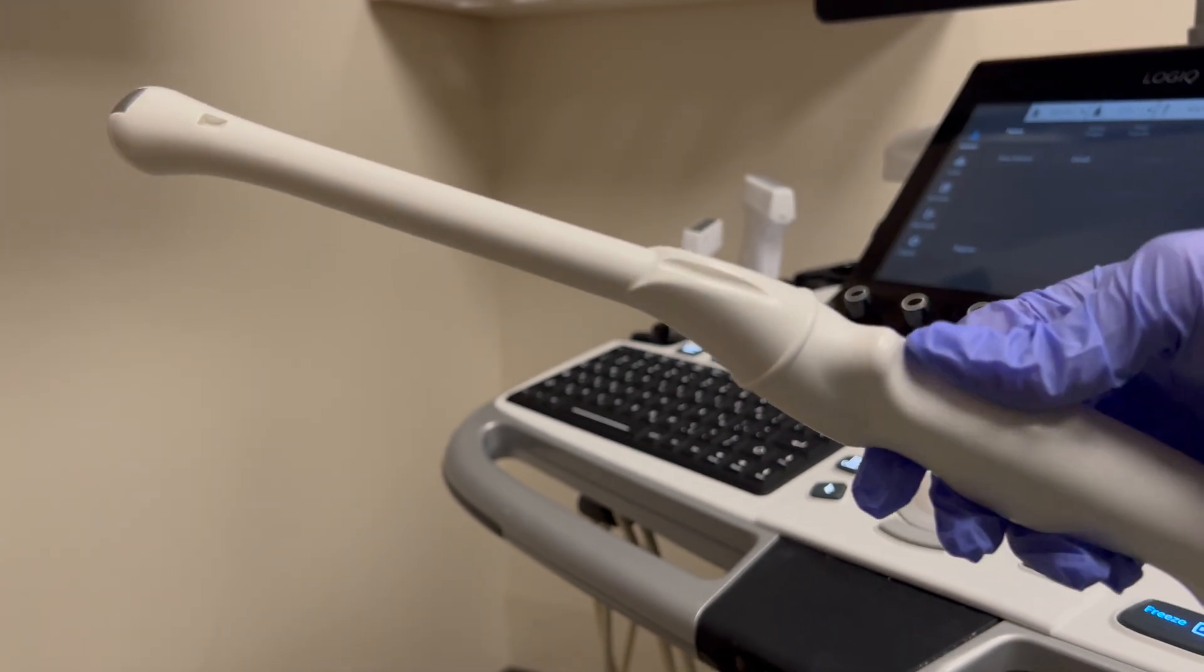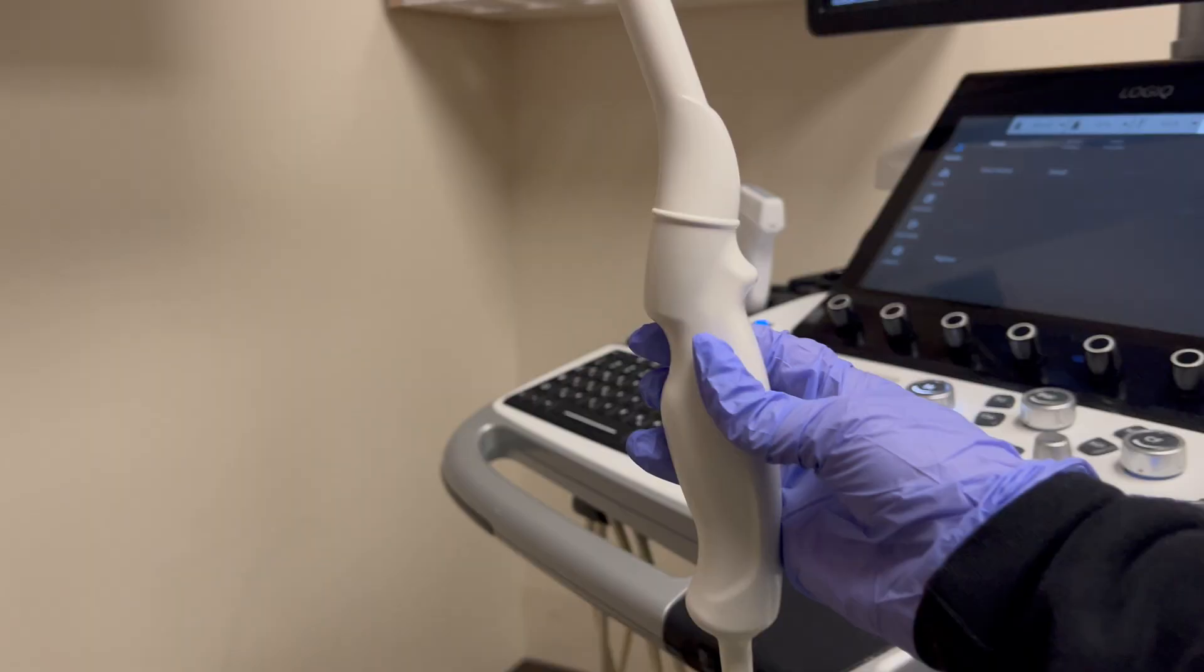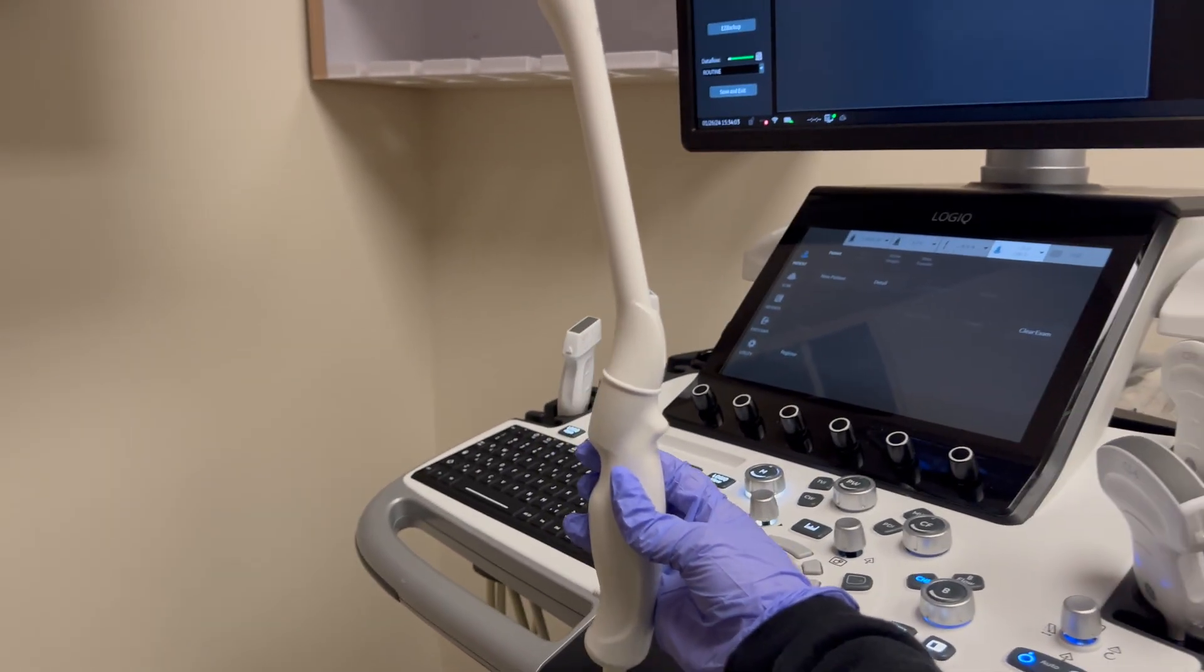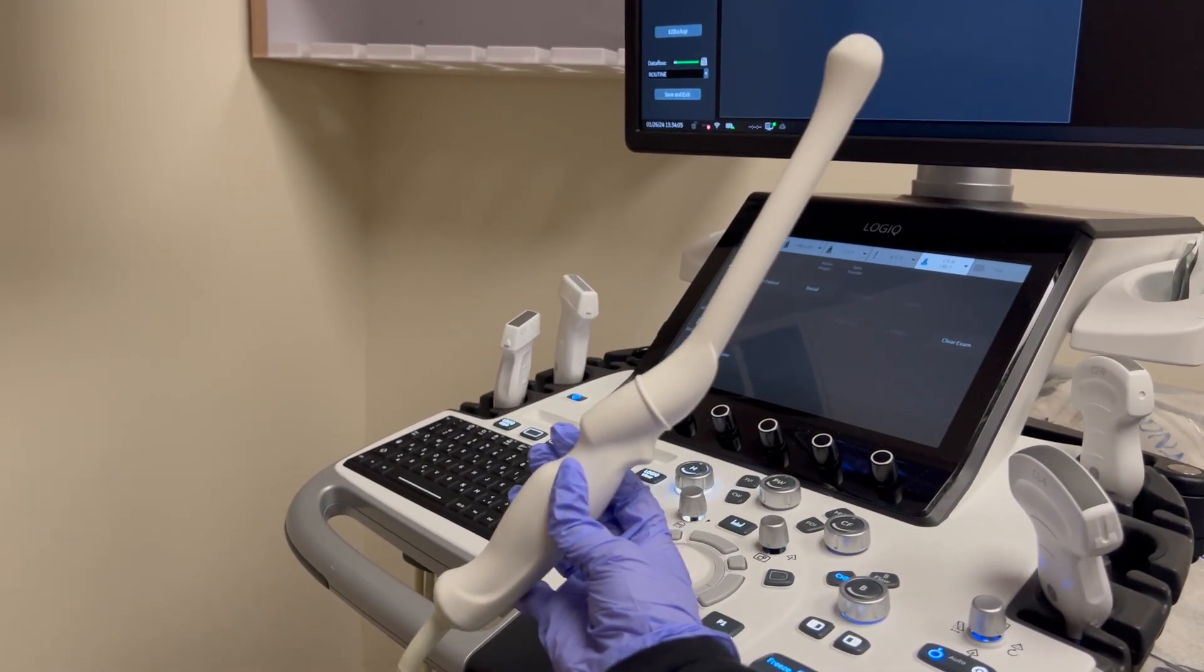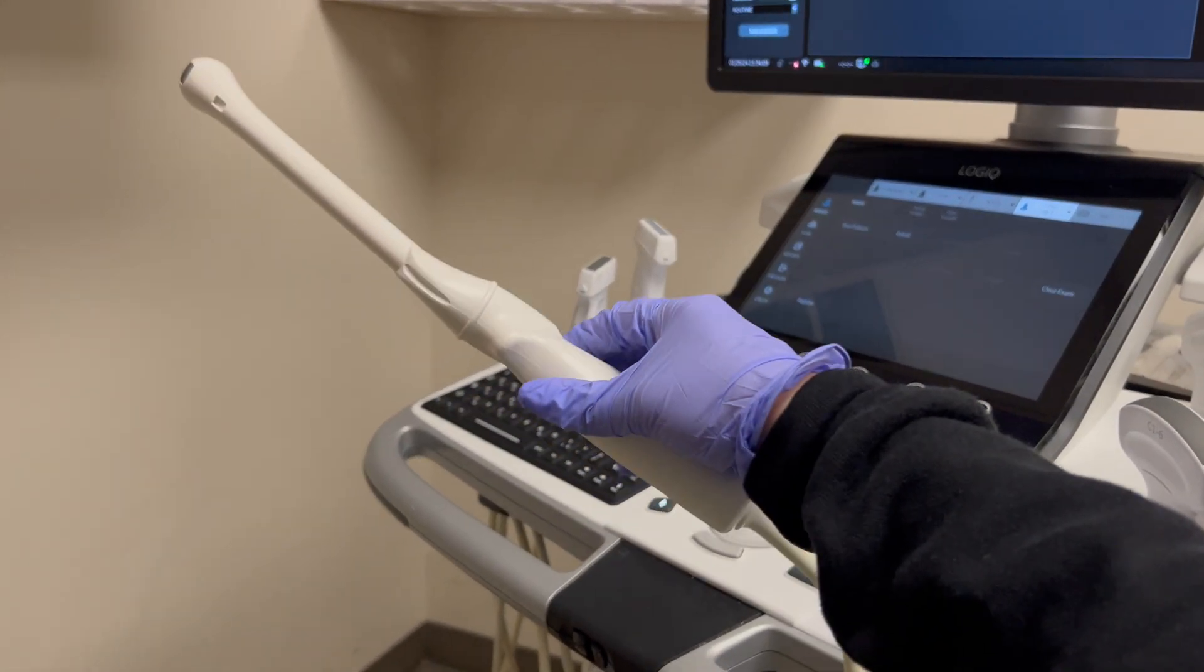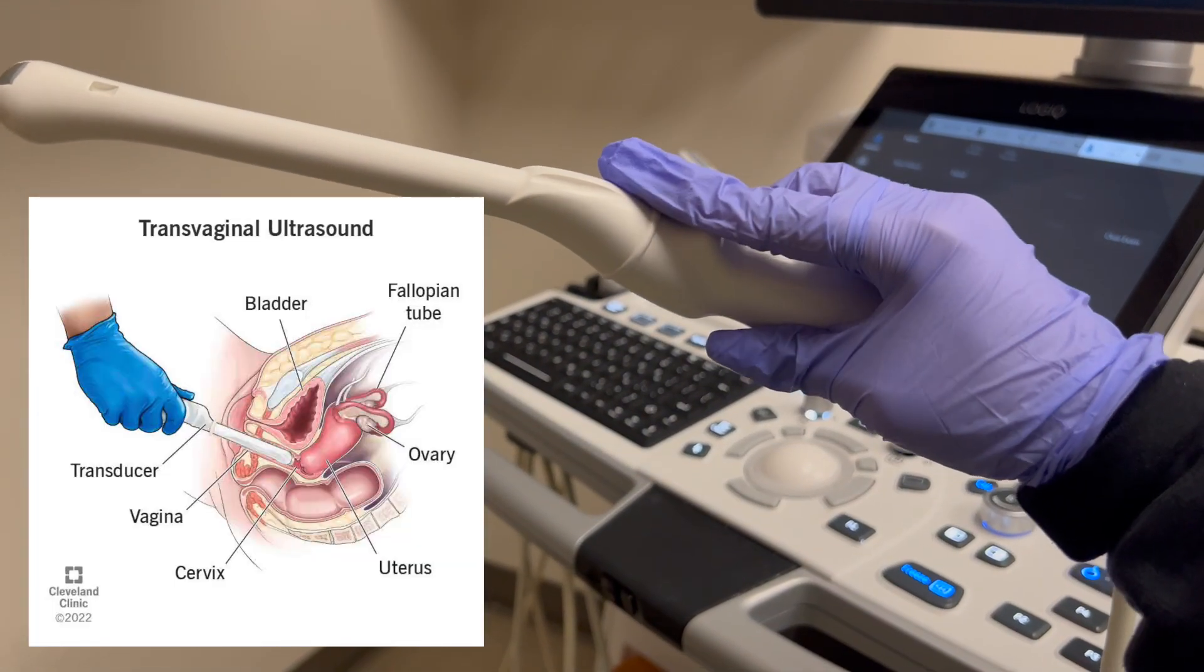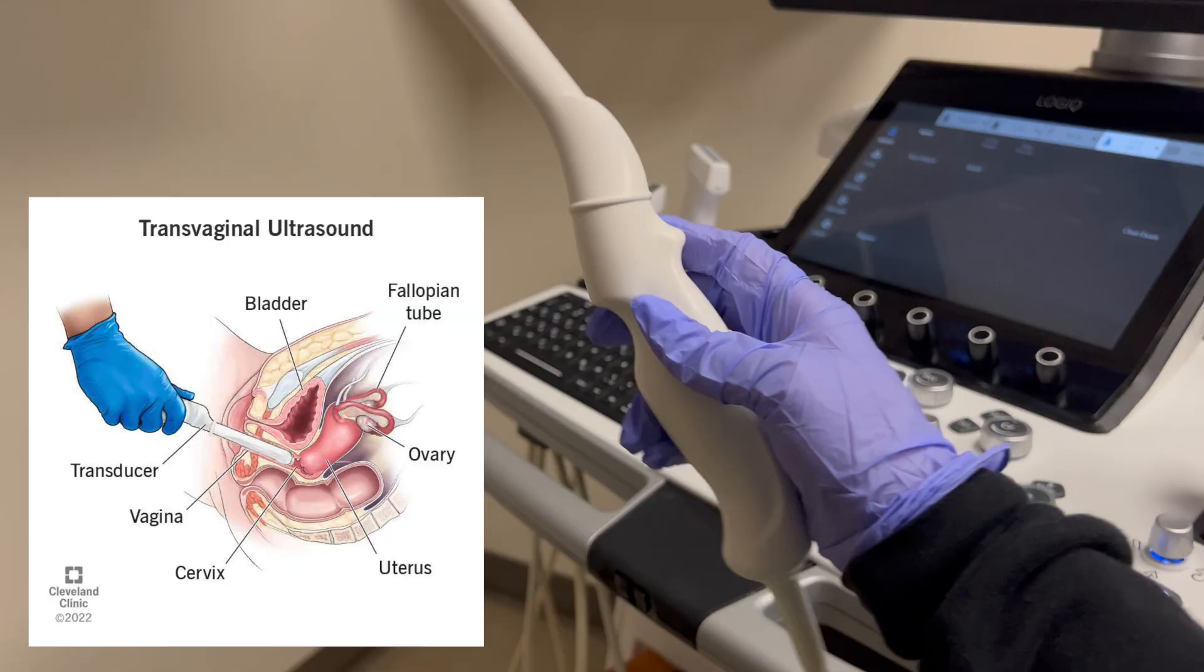Also don't forget to check out my basic introduction to ultrasound machines where I talk about all of the buttons we use. So let's get started. This probe here is the transvaginal or endovaginal probe. This probe is most commonly known for assessing the female organs such as the cervix, uterus, ovaries and their surrounding structures.